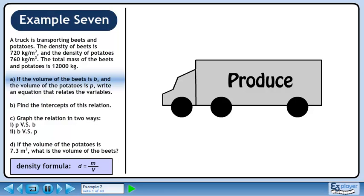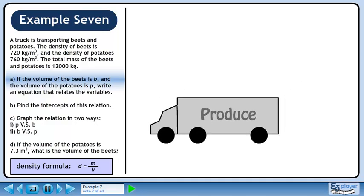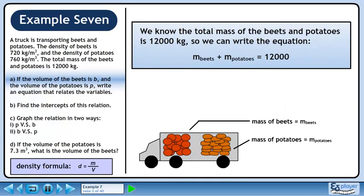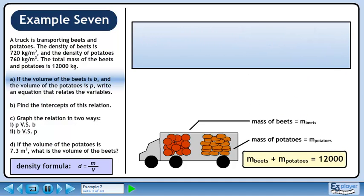If the volume of the beets is b and the volume of the potatoes is p, write an equation that relates the variables. We know the total mass of the beets and potatoes is 12,000 kg, so we can write the equation: mass of beets plus mass of potatoes equals 12,000. Now cross multiply the density formula to solve for mass. This gives us m equals dv.